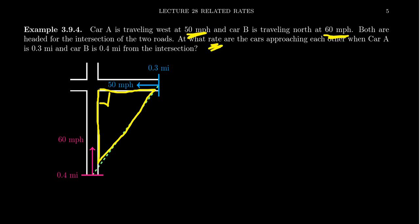We want to figure out at what rate the cars are approaching each other. We have information about known derivatives, and another derivative we need to find. Given the right triangle, it makes sense to use the Pythagorean equation. Let x be the distance between the intersection and car A, y be the distance between the intersection and car B, and z be the distance between car A and car B. So x² + y² = z².